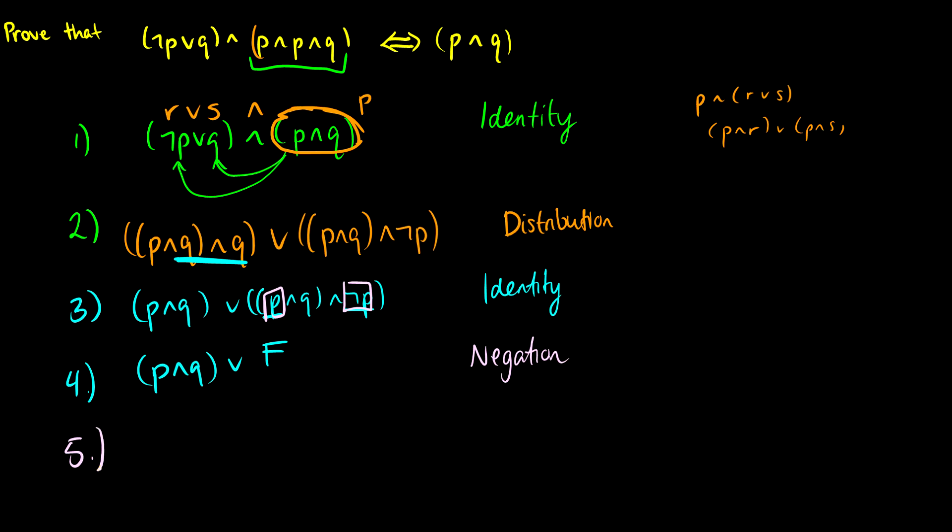And then step five, we have P and Q or false and we know this simplifies to just P and Q. Because if we have something that could be true or something that's always false, it's always going to take the upper value. So that's always going to take the upper value of P and Q. So that's the second question. We have successfully reduced this thing on the left to this thing on the right.